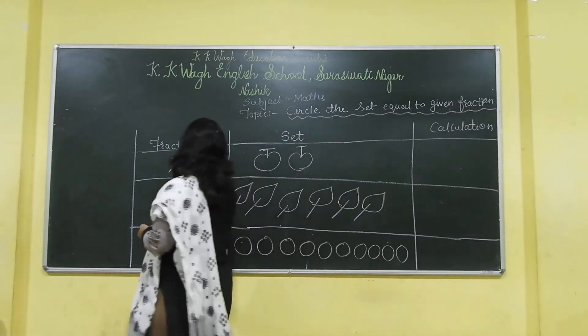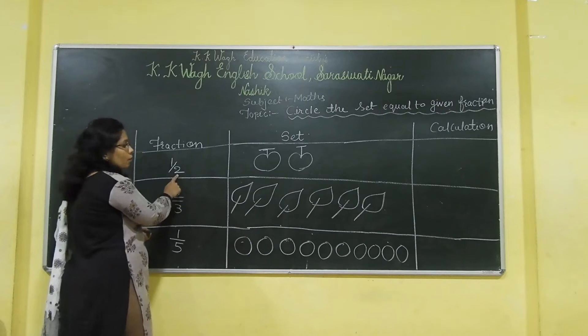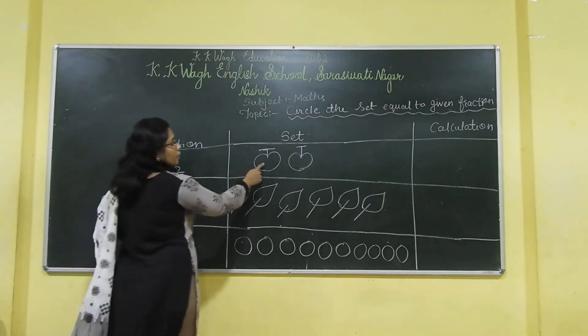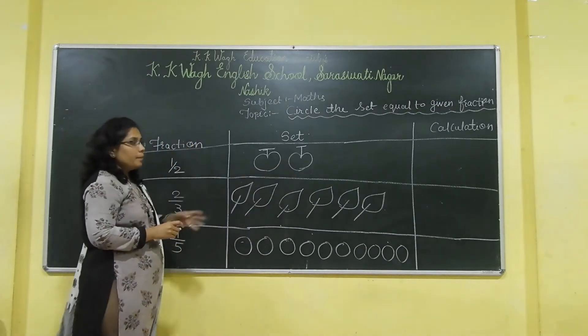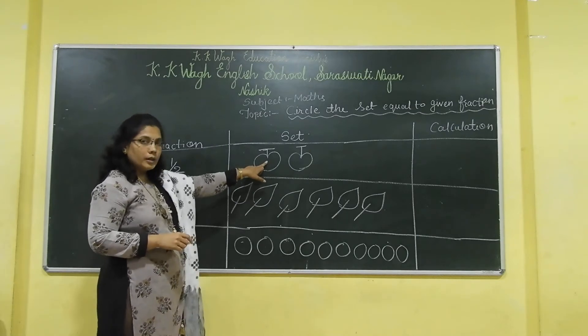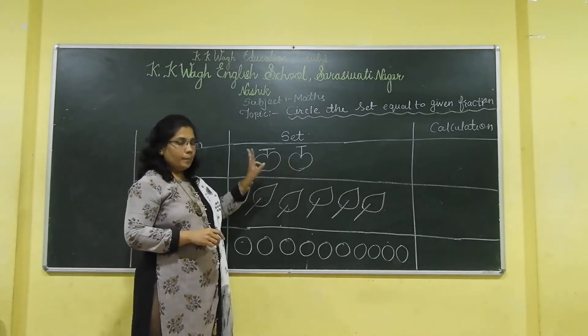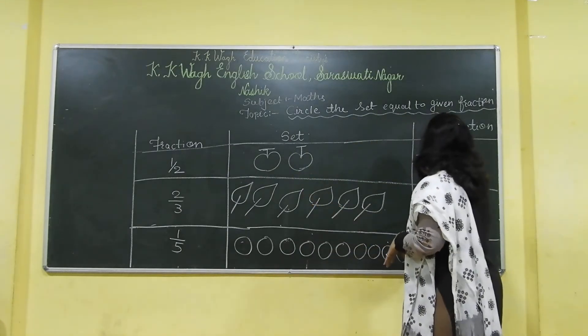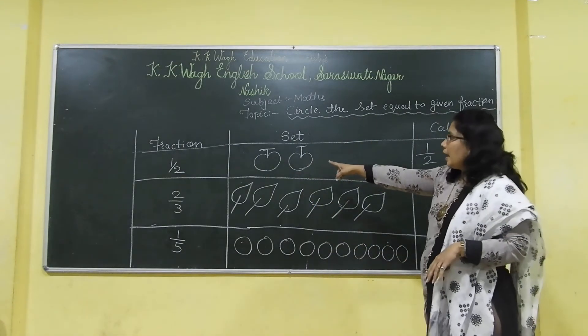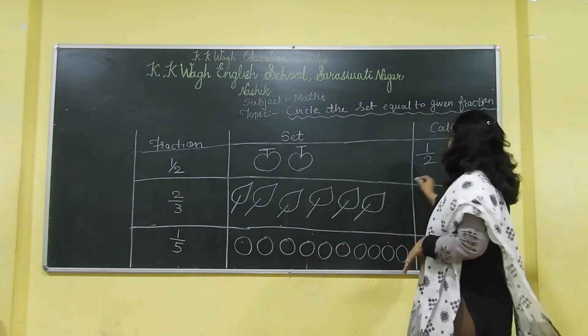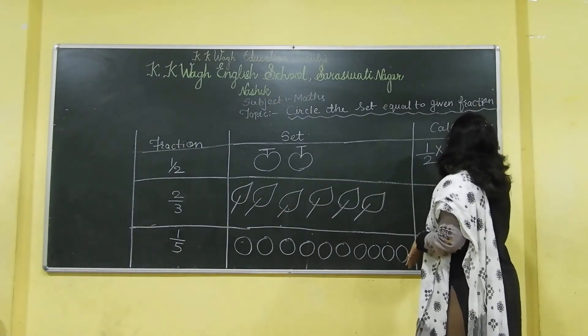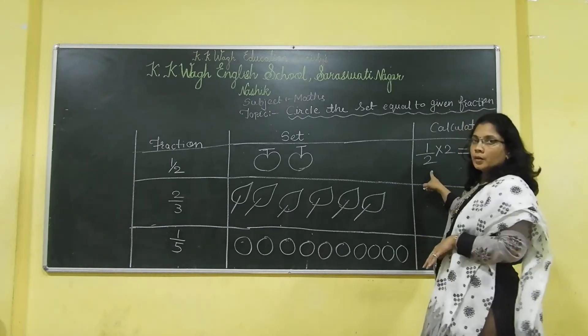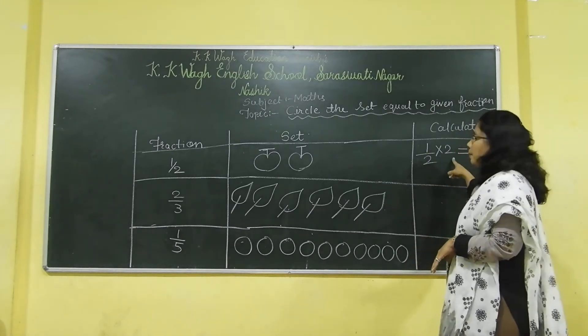Now here, what is the fraction here? 1 upon 2. And number of apples. Here the apples are 1 and 2. So, we will write here, 1 upon 2 multiplied by total number of apples, 1 upon 2 multiplied by 2.